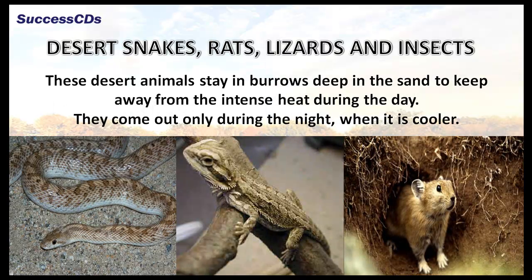But what happens to desert snakes, rats, lizards and insects which do not have all the features that are present in a camel? These desert animals stay in burrows deep inside the sand to keep away from the intense heat during the day. They come out only during the night when it is cooler.